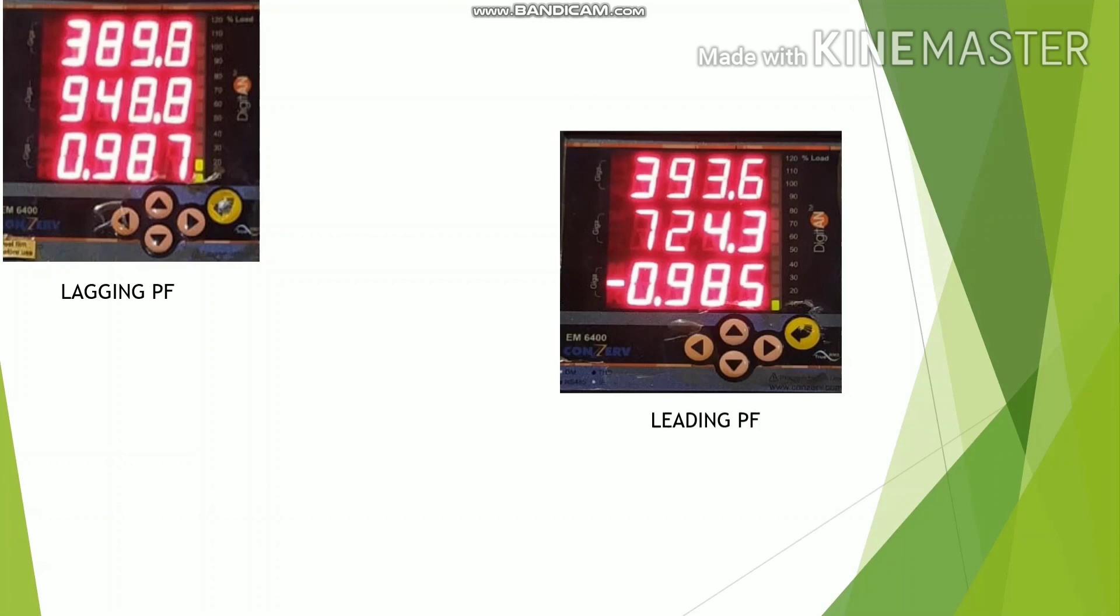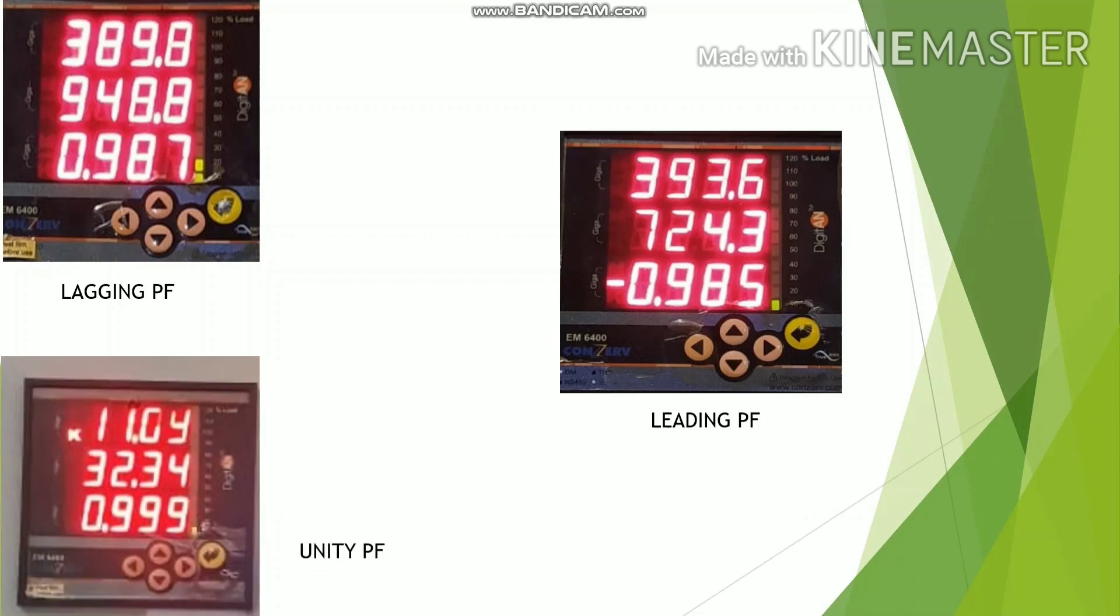Next one is unity power factor. It is not possible to maintain an exact unity, but 0.999 is good power factor. In this, voltage and current are traveling together.